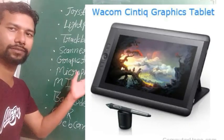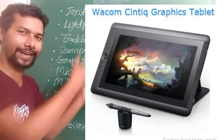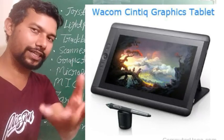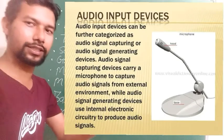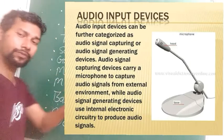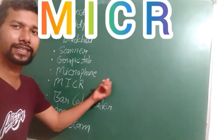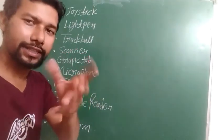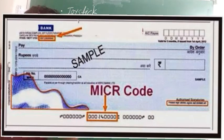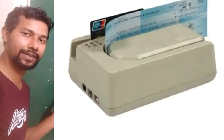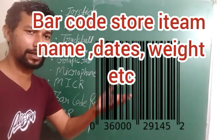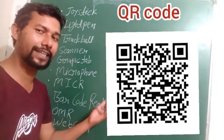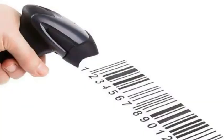Graphic tablet looks like a simple graph with X and Y axes; it is used to make critical designs and is used by engineers and others. Microphone captures the digital sound of your voice. MICR stands for Magnetic Ink Character Reader — it is used to read special or confidential data written in secret code on cheques or bank records. Bar code reader reads the bar code printed on every product, which contains information like product name, weight, and other related data.